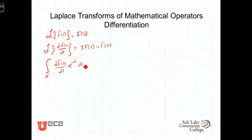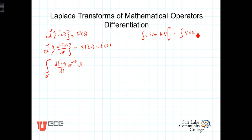You'll recall from your calculus class that when you have two different functions of time, one way of going about integrating them is to use integration by parts. Parts works when you can differentiate one of the functions and it becomes easier or simpler, and at the very least, when you integrate the other function, it doesn't become more complicated. Here's the formula for integration by parts: the integral of u dv equals u times v evaluated at the limits of integration, minus the integral of v du.